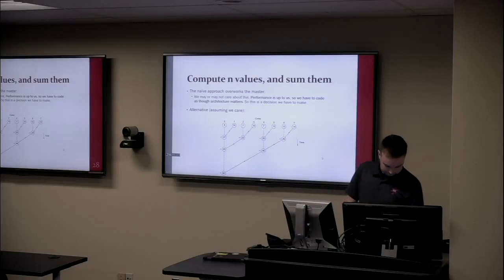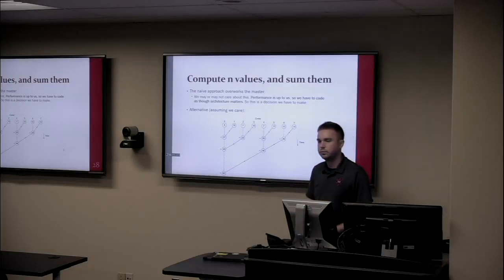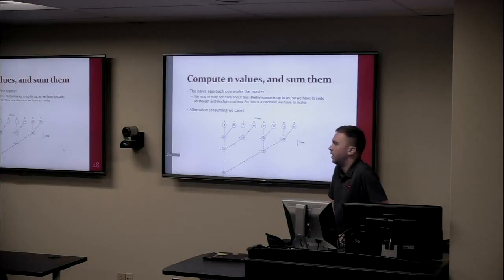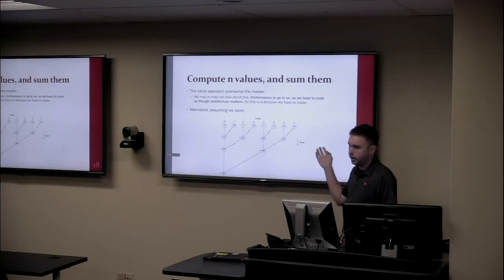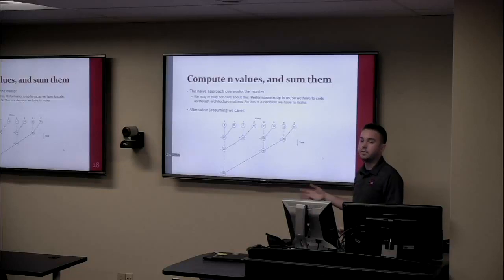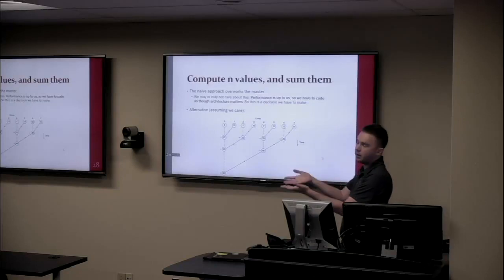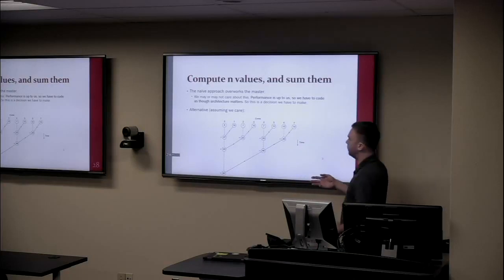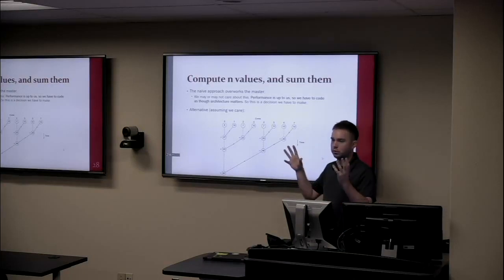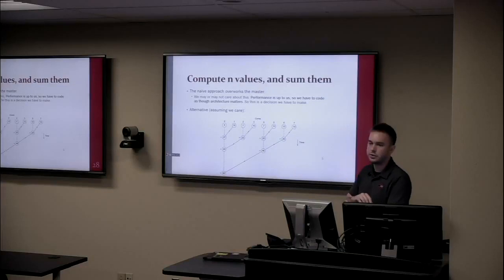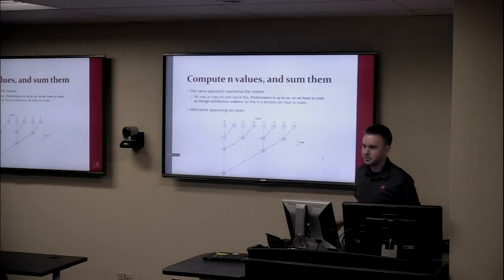Is that structure something you specify in code or is it more architectural? MPI has a function called allgather. You can do this totally manually, but allgather — as opposed to just gather, which sucks in all values to one rank and performs an operation — will automatically do this kind of distribution between all of the ranks, all of the cores in the process.